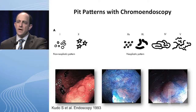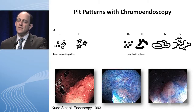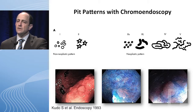You might want to know what pit patterns we're talking about. This is the Kudo classification from as far back as 1993, in which we have non-neoplastic patterns on the left and neoplastic patterns on the right. You can see how non-neoplastic patterns might look at first glance, but the more curvilinear and cerebral-form appearances of the mucosa and crypt patterns become important.